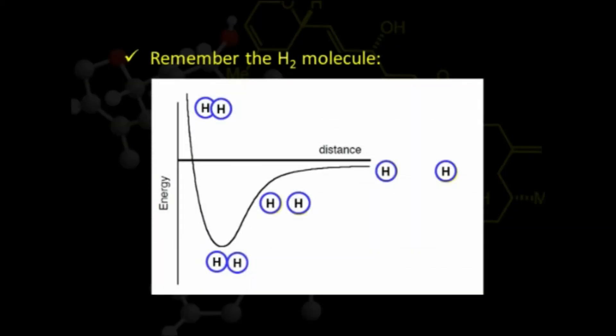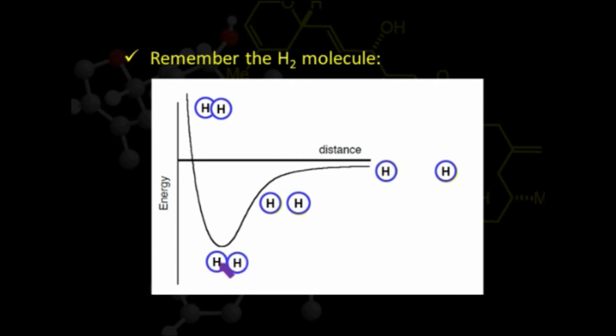Now, why is hyperconjugation stabilizing? We can see this in the potential energy diagram of the hydrogen molecule. As two hydrogen atoms come close to each other, the potential energy of the system decreases. After a certain point, the potential energy suddenly increases. It is at the optimal distance that the system is stabilized, because of the lowering of potential energy.